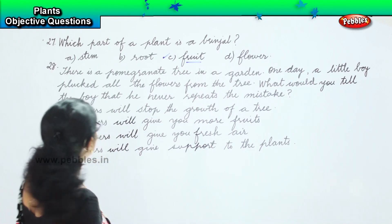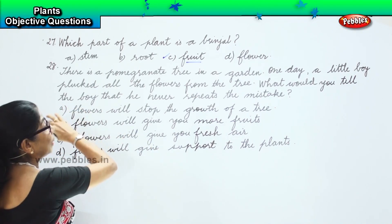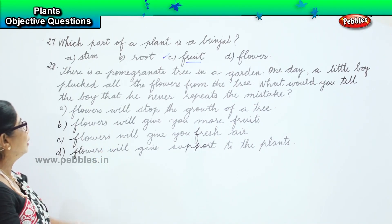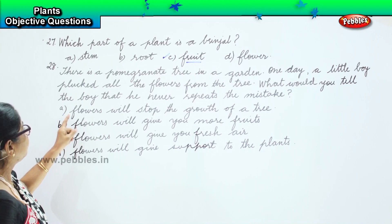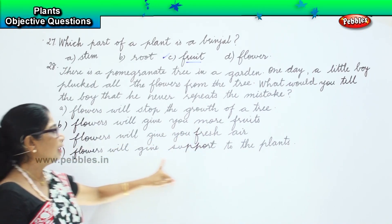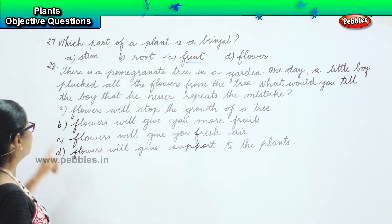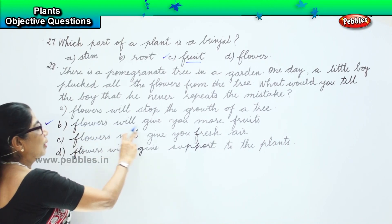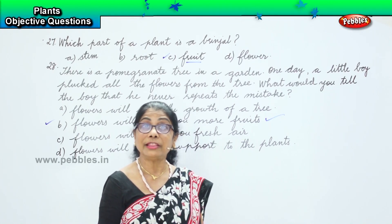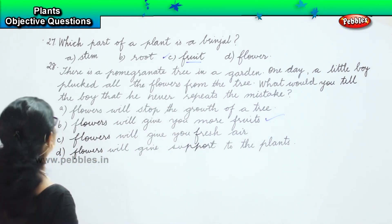Now look at the question. A little boy plucked all the flowers from the tree. What would you tell the boy that he never repeats the mistake? Flowers will stop the growth of a tree — no, that's a wrong answer. Flowers will give support to the plant — no. Flowers will give you fresh air — no. Option B says flowers will give you more fruit, and that's the answer. Tell the boy that flowers are going to give you fruit. If you pluck the flowers, where can you get fruit from?